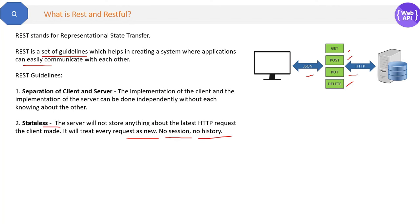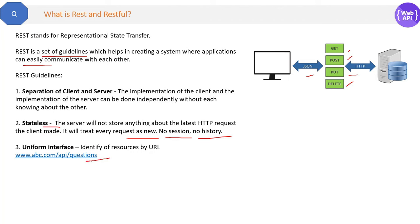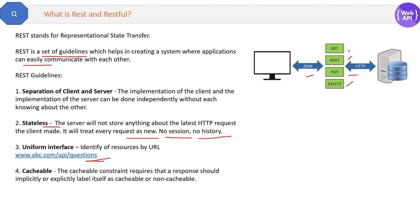Third guideline of REST is uniform interface. Uniform interface means you can identify the request by its URL, so every URL is uniform and unique. That means by looking at a URL, you can identify what operation it is going to do. For example, a URL referring to 'questions' means we are trying to get the list of questions from that request. So that is uniform interface.